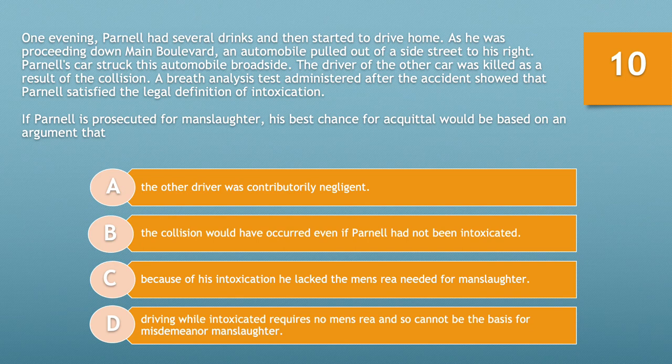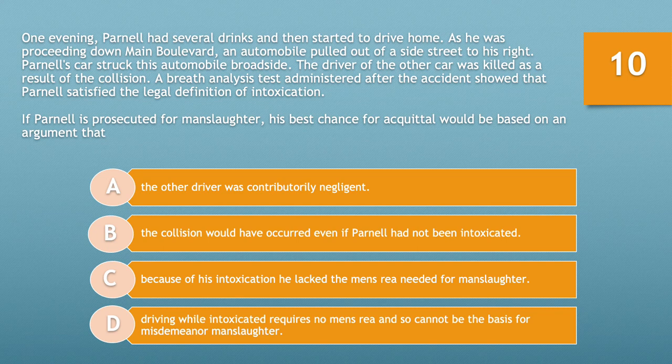Question number ten, the last one in this grouping. One evening, Parnell had several drinks and then started to drive home. As he was proceeding down Main Boulevard, an automobile pulled out of a side street to his right. Parnell's car struck this automobile broadside. The driver of the other car was killed as a result of the collision. A breath analysis test showed that Parnell satisfied the legal definition of intoxication. If Parnell is prosecuted for manslaughter, his best chance for acquittal would be based on: A, the other driver was contributorily negligent; or B, the collision would have occurred even if Parnell had not been intoxicated.